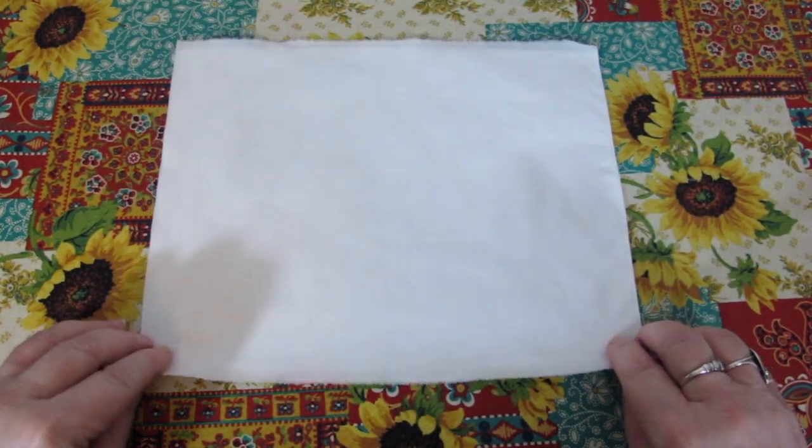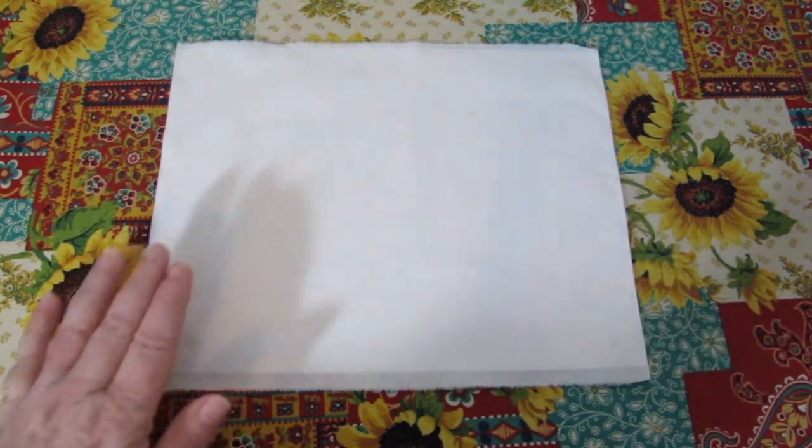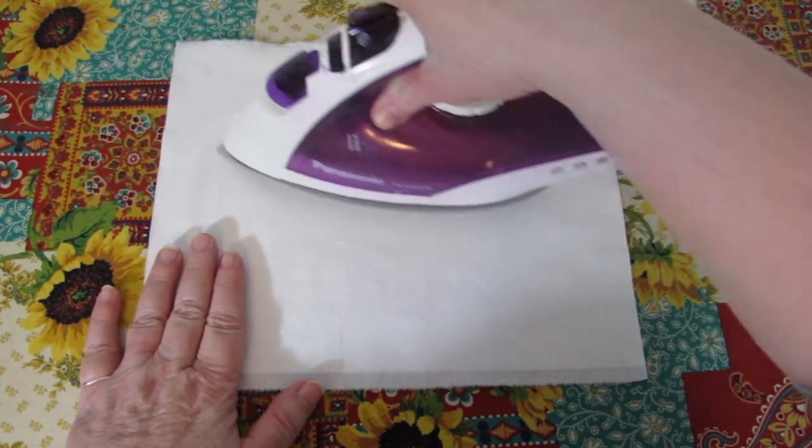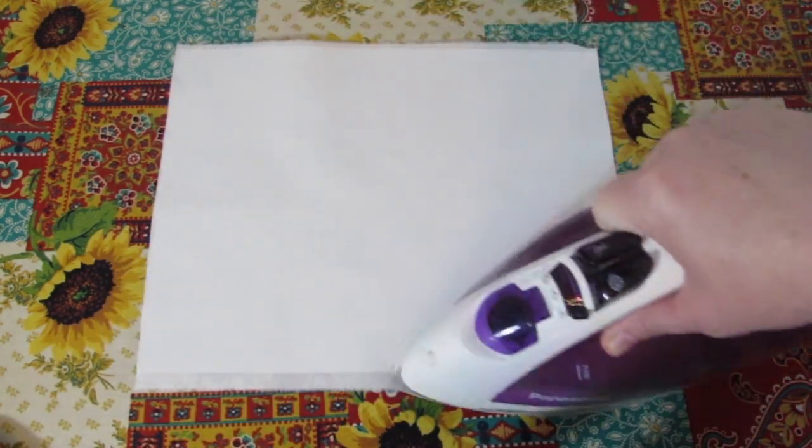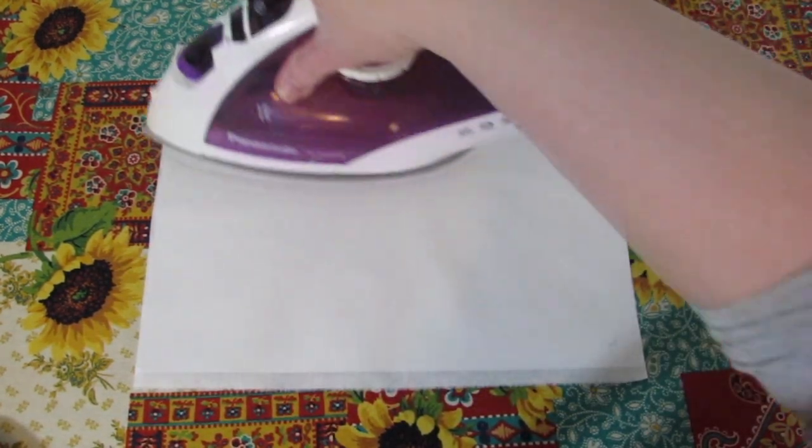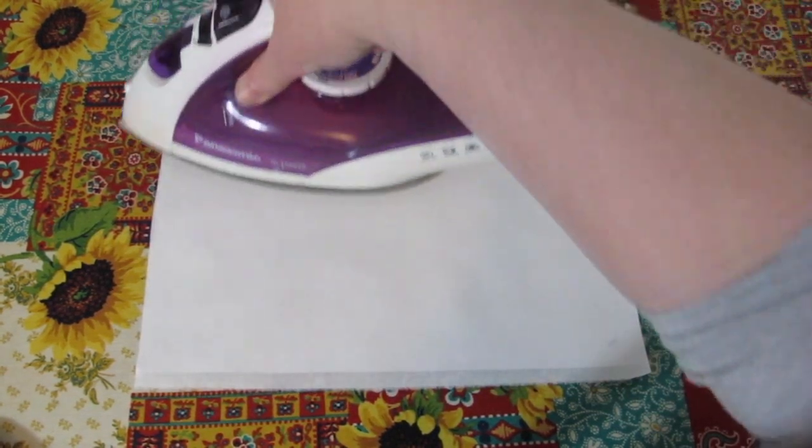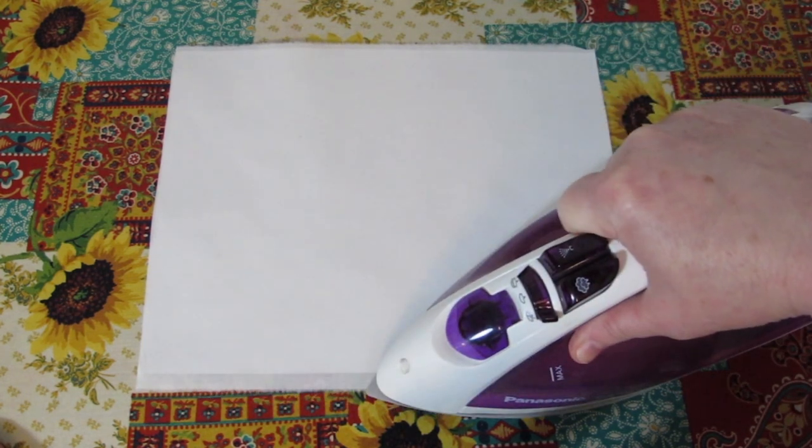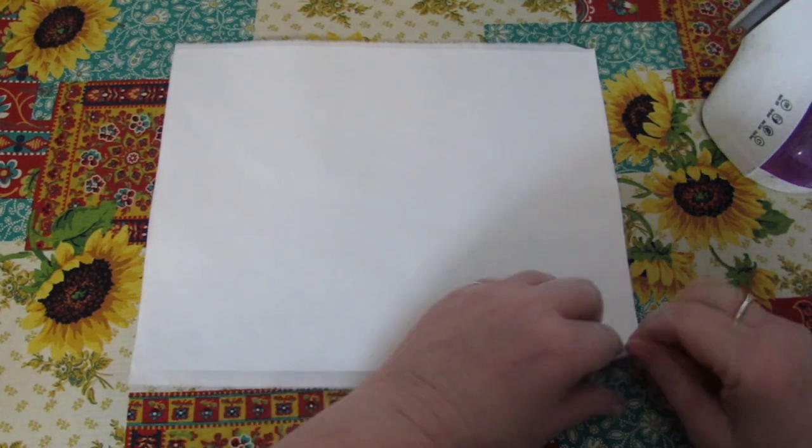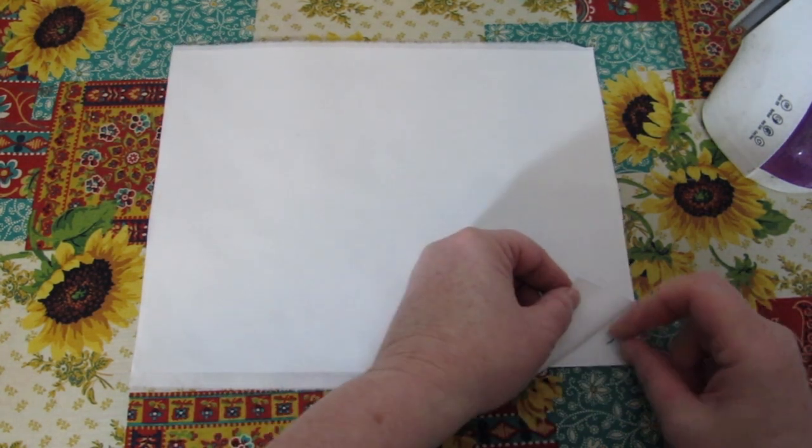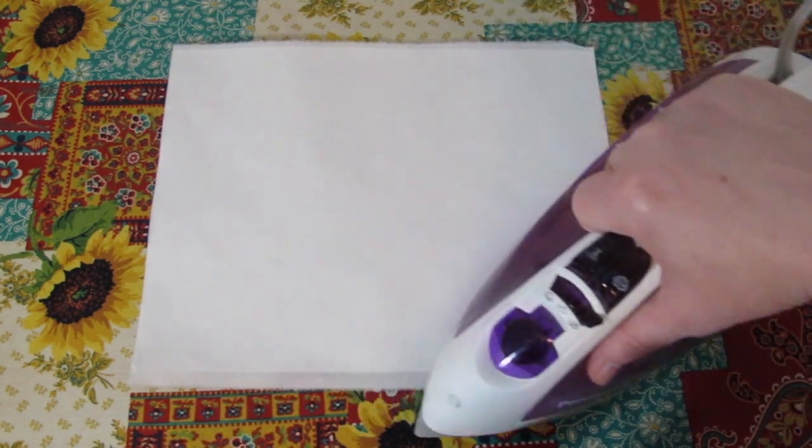To attach a freezer paper backing, cut the freezer paper to size and place it shiny side up on your ironing board. Place the fabric on top and using a dry iron, iron the fabric to the freezer paper. Make sure that the fabric is perfectly smooth and there are no wrinkles or bubbles on the surface. Be careful not to leave the iron in one place for too long, as it may scorch the fabric. If you notice that any stray threads have got caught in between the fabric and the freezer paper, take the time to remove them, otherwise your image won't print correctly.